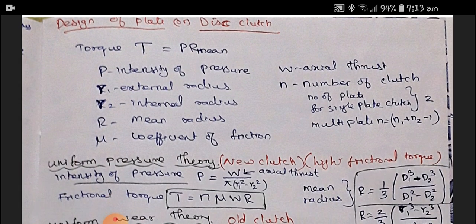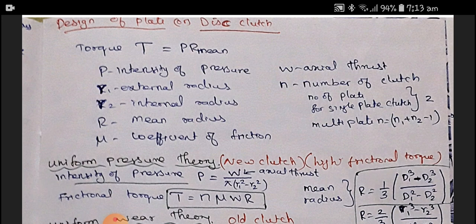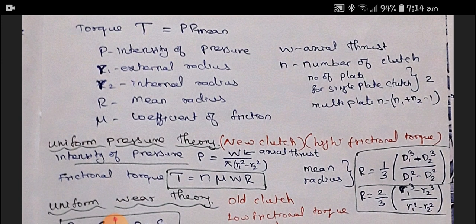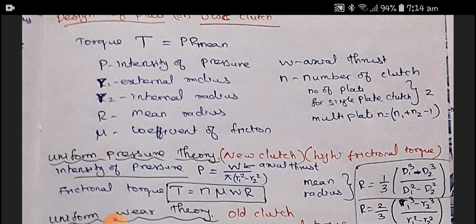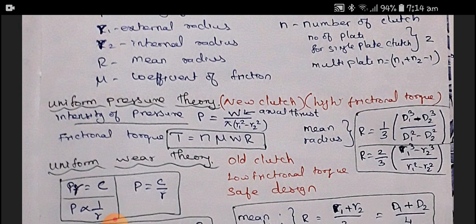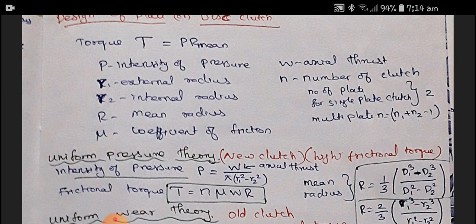For the design of the clutch, torque is an important parameter. Torque T is equal to P into R_mean, where P is the intensity of pressure and R is the mean radius. For finding the mean radius, we have two different theories: uniform pressure theory and uniform wear theory. Uniform pressure theory is for new clutches — high frictional torque comes into picture. Notations used: W as axial thrust, R1 as external radius, R2 as internal radius, μ as coefficient of friction, and N as number of clutch surfaces. For a single plate clutch, N equals 2. For multi-plate clutch, N equals N1 plus N2 minus 1.